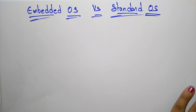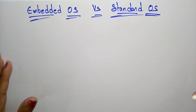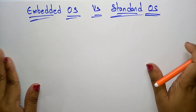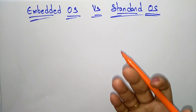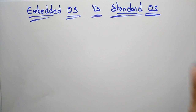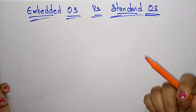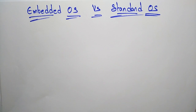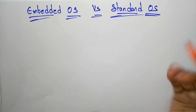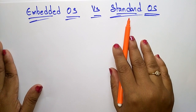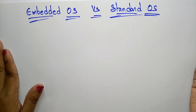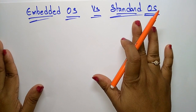Welcome back. The next topic in the subject Embedded Systems is embedded operating system versus standard operating system. A standard operating system is the operating system present in general purpose computers — your laptops or mobiles. Standard operating systems like Windows XP and Windows 10 are installed on such general purpose systems.